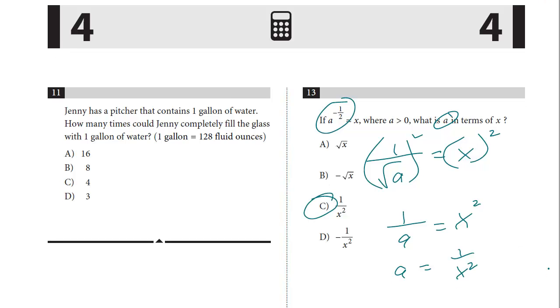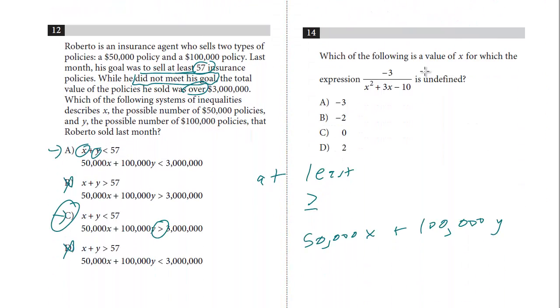Let's take a look at the last question on this page. 14. Which of the following is a value of X for which the expression is undefined. And undefined, think about with slope, for example. If you have a slope and you have a zero on the top, that's a slope of zero. But that would just be a horizontal line. But if you have a denominator where it's zero, that's a vertical line, that's undefined. And so just remember, anytime you see a question undefined, that means the denominator is zero.